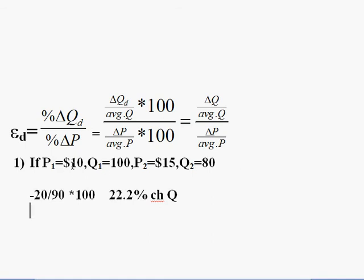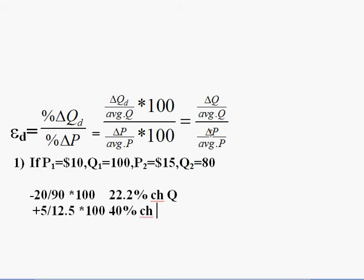Now the percent change in price: the price goes from $10 up to $15, so the change is +5. The average price is (10 + 15) / 2 = 12.50. So: 5 / 12.5 × 100 = 40 percent change in price.